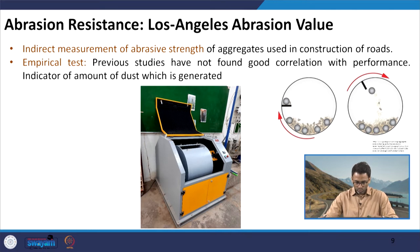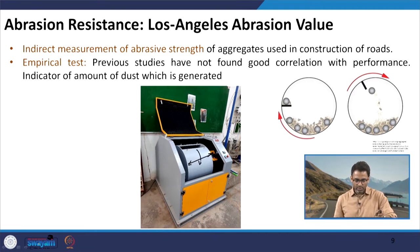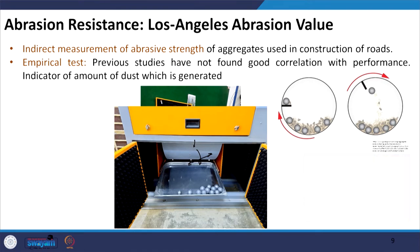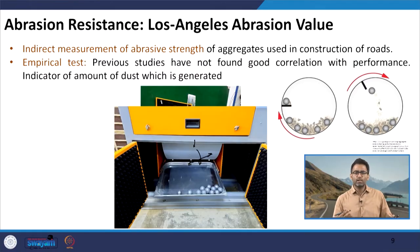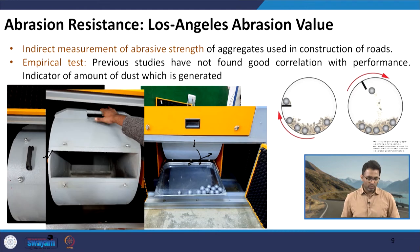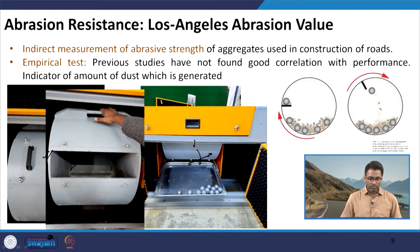These are some pictures of the Los Angeles abrasion machine taken from the laboratory at IIT Roorkee. You can see the cylinder which is placed inside the machine and this cylinder rotates about its horizontal axis. It has an opening where the materials and abrasive charges are put. These are spherical balls which are used as charges in the Los Angeles abrasion machine. 12 charges should typically be available, and the number of charges used depends on the type of gradation. After we open the cap, the material — aggregates and charges — is put inside, and then the test is done.